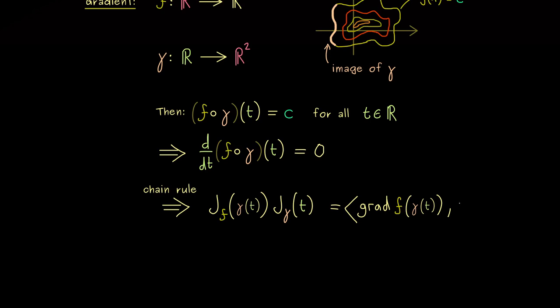However then we have to substitute this matrix product with the standard inner product. Moreover the second Jacobian matrix can also be written shortly as gamma prime of t. And now we know from above this is simply zero for all points t. However now this means both vectors here in the inner product are orthogonal to each other.